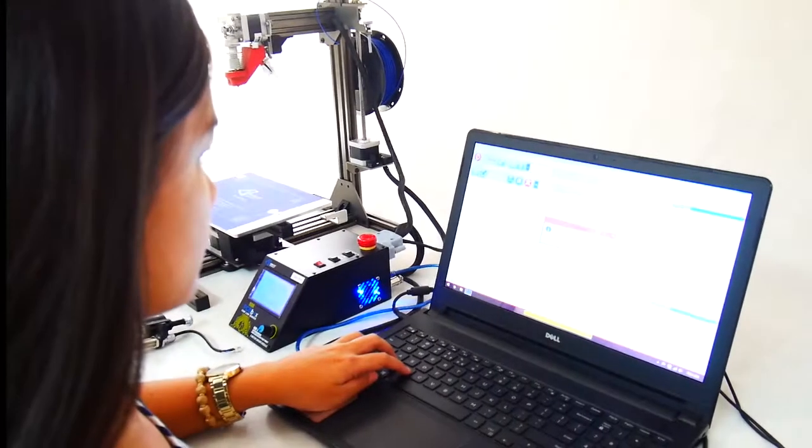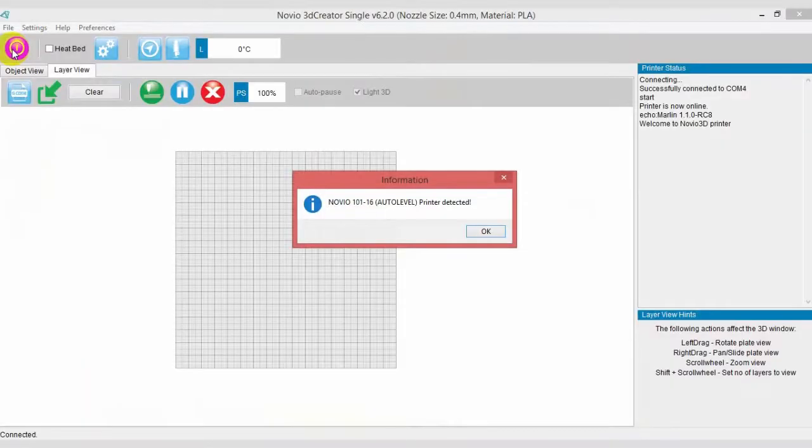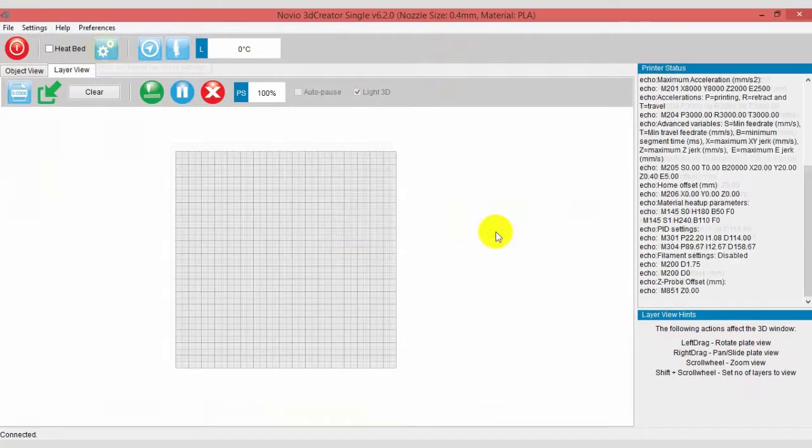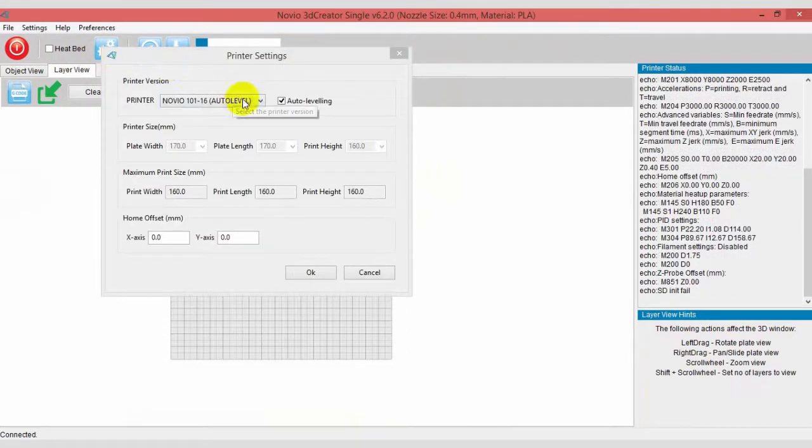Open the 3D Creator software. An information box will appear stating that Novio driver was loaded in the PCB. Click the printer settings icon to check the printer version loaded.